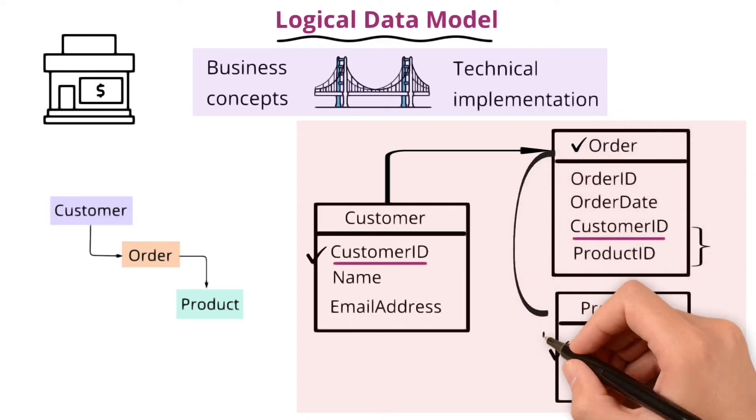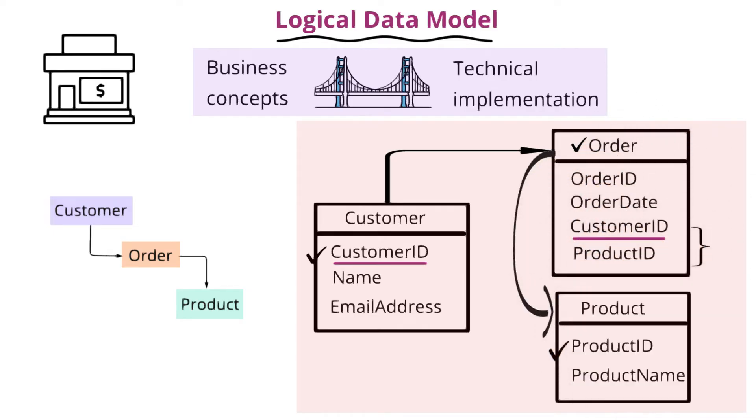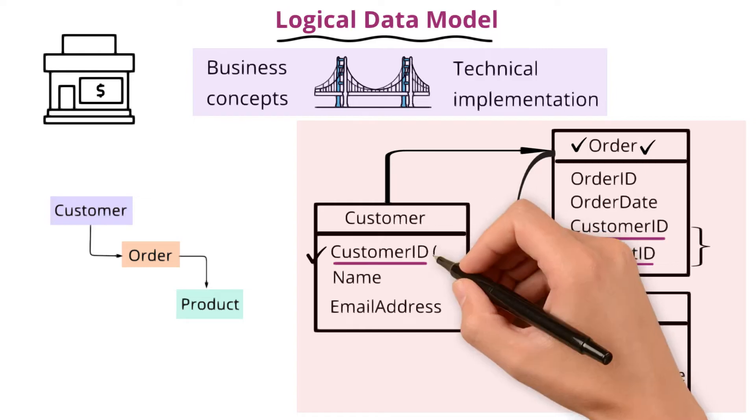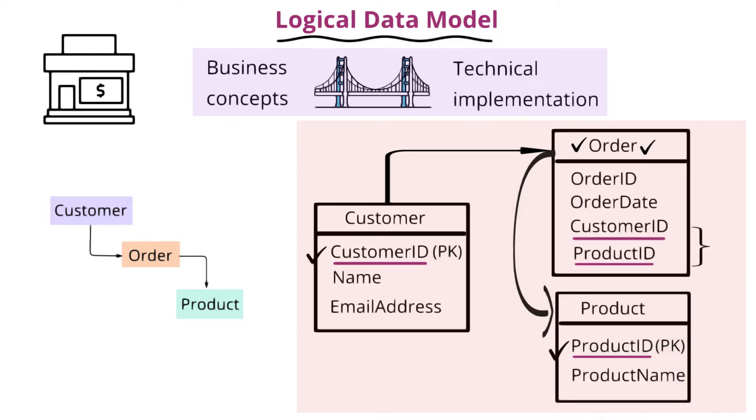Orders contain products. And this relation between products and orders is identified by a product ID. That's why you see the primary keys from the original entities as the foreign keys in their related entities.